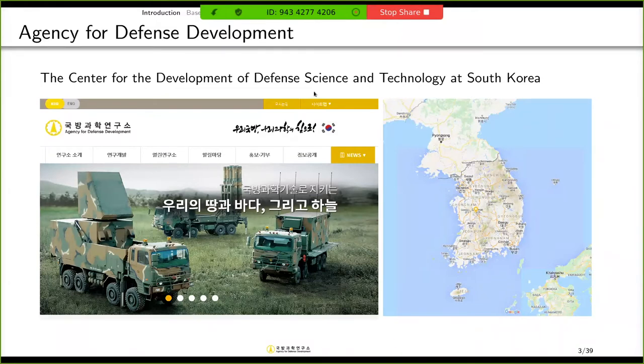ADD is located at Daejeon. This is the map of South Korea. And here is China. And here is Japan. And the capital of South Korea is here. And Daejeon is almost the center of South Korea. And as well as ADD, there are many national laboratories. So Daejeon is a kind of science city in South Korea.